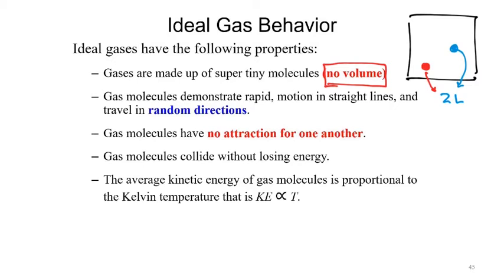The next assumption is that molecules collide without losing energy. This becomes important because if gas particles kept losing energy on collision, they would eventually stop moving. So we assume that loss of energy is so minimal we don't see it. And the last one: kinetic energy of gas particles is proportional to temperature — when it gets hotter, things move more; when it gets cooler, things move less.